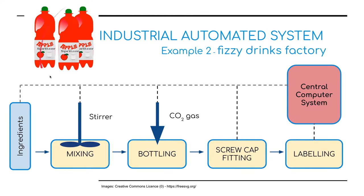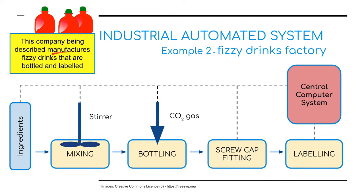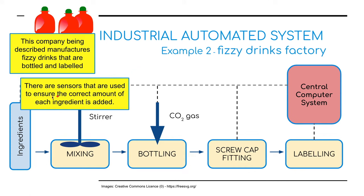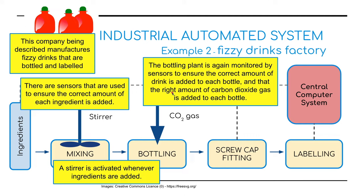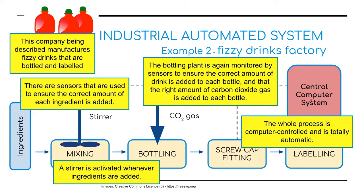Now we're going to look at a fizzy drinks factory. We've got a diagram showing ingredients going into a mixer, stirred around, then going into bottling where CO2 gas is added because it's fizzy, the cap is screwed on tight, and it's labeled — all controlled from a central computer system. Sensors ensure the correct amount of each ingredient is added. A stirrer is activated whenever ingredients have been added. The bottling plant is monitored by sensors to ensure the correct amount of drink and carbon dioxide gas is added to each bottle. The whole process is computer controlled and totally automatic.